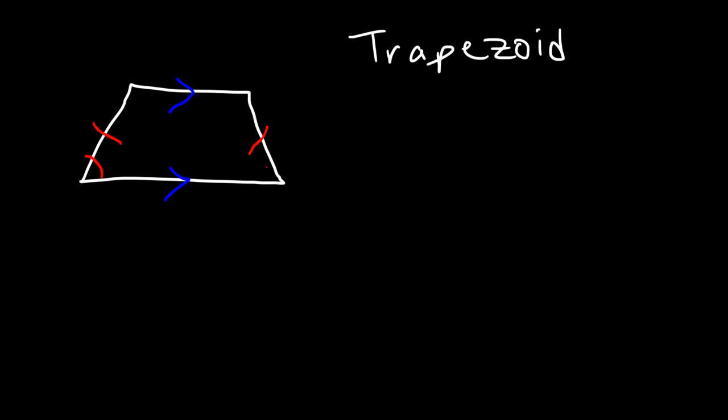Now there are certain types of quadrilaterals that have specific names. This particular quadrilateral is the trapezoid. In this figure these two lines are parallel. Now if you have an isosceles trapezoid these two sides are congruent. In addition the angles opposite to those two sides are congruent if it's an isosceles trapezoid.